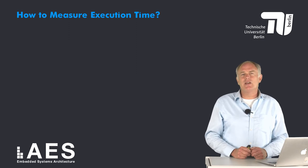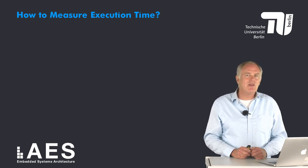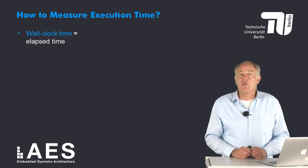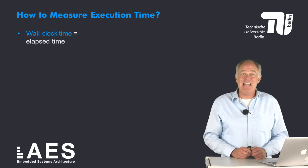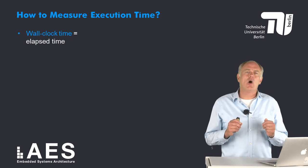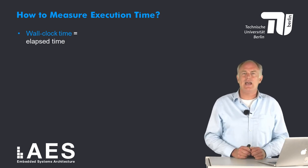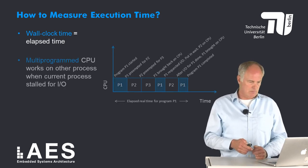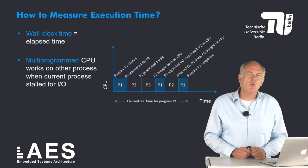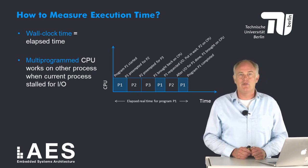Even something as simple as measuring execution time is open to multiple interpretations. Do we measure the wall clock time — that is, the elapsed time? This includes everything: disk accesses, IO, operating system overhead, and so on. But almost all CPUs are multiprogrammed, meaning that the CPU works on another process when the current process is stalled waiting for IO.